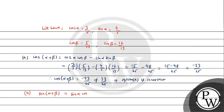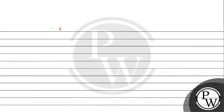Now option B: sin(α+β). Expanding the formula: sin α cos β + cos α sin β = (4/5)(5/13) + (3/5)(12/13) = 20/65 + 36/65 = 56/65. Therefore sin(α+β) = 56/65, which matches option B exactly. So option B is correct.